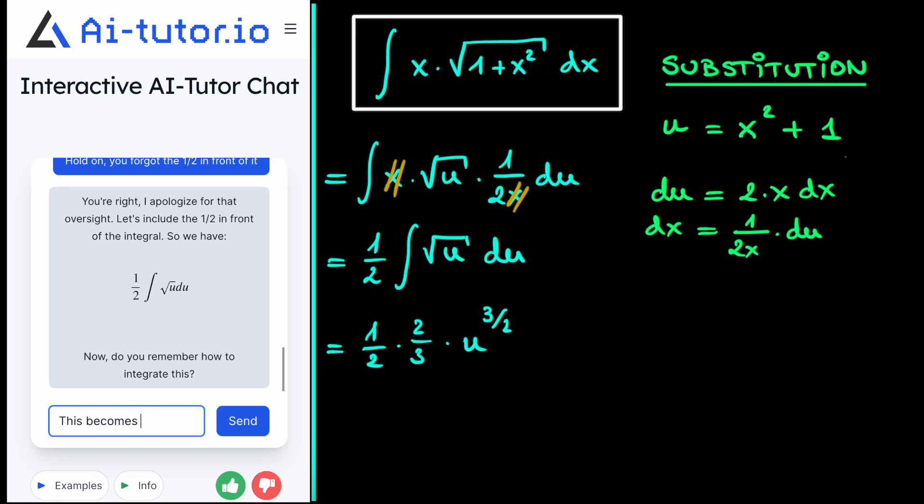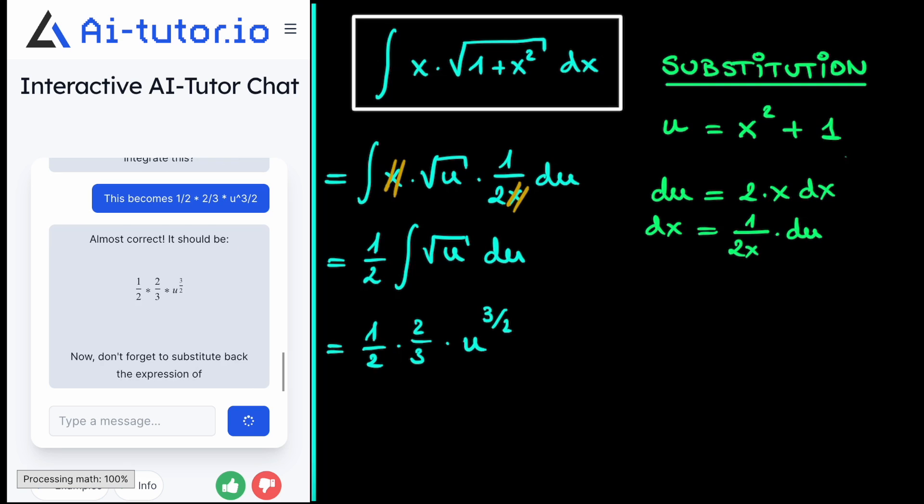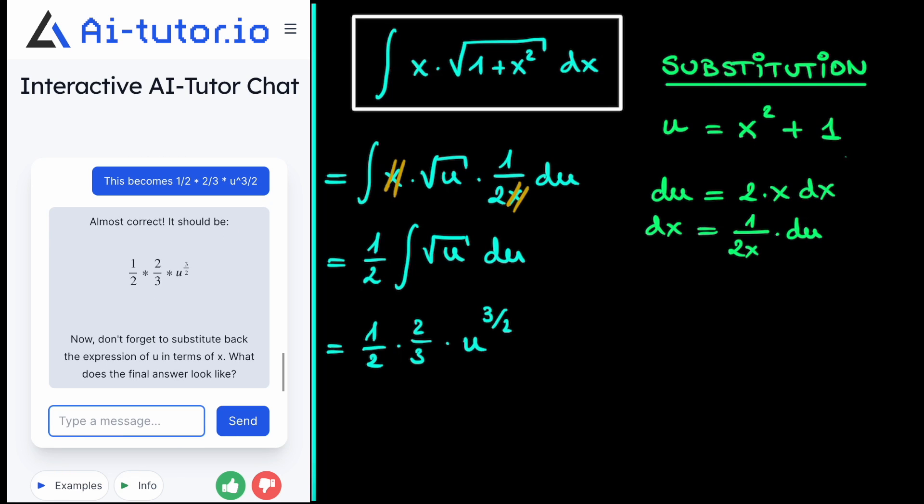And if we want to check our result with the AI tutor, then we will see that it will say that it is almost correct and then continue to give exactly the result that we put in. Now, this is not an error, but maybe it interpreted our input in the wrong way. And we can avoid it by putting brackets around the fractions. Now, as a good tutor, it reminds us that we still need to write the result in terms of x again, our original variable.